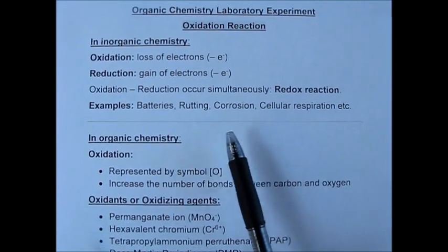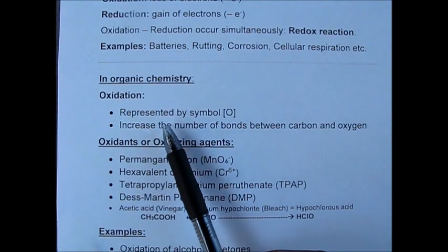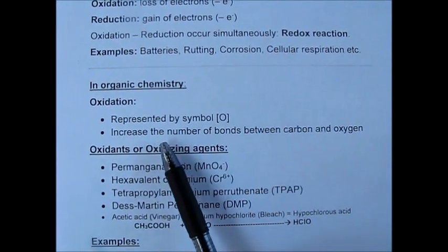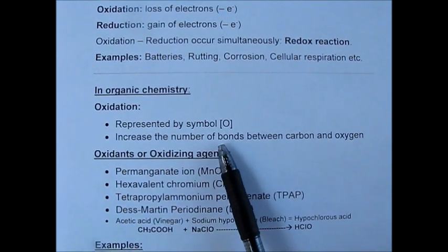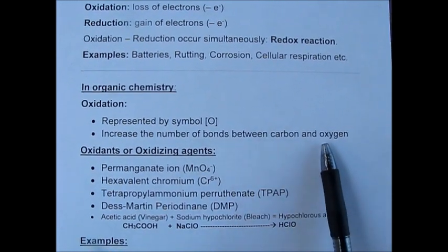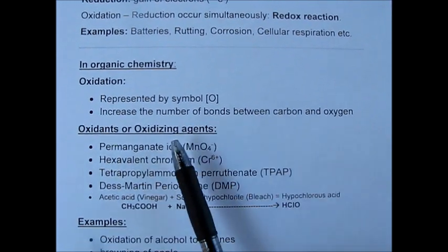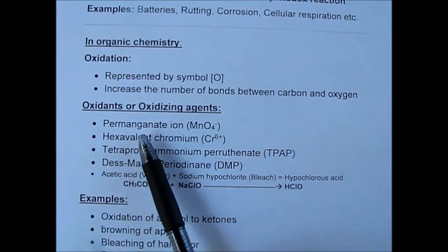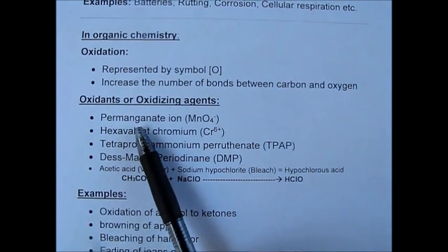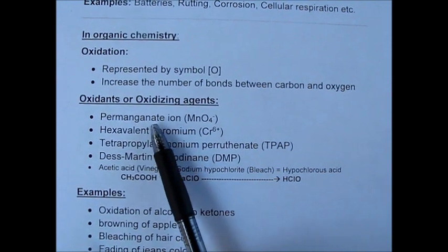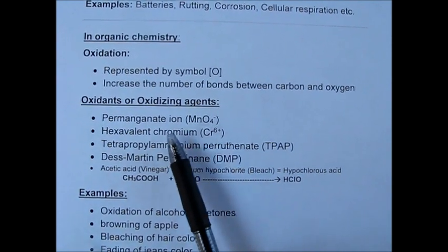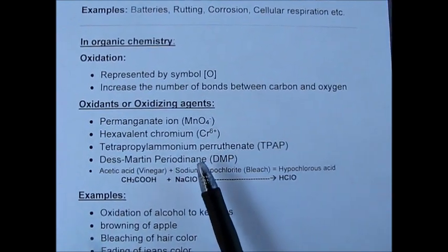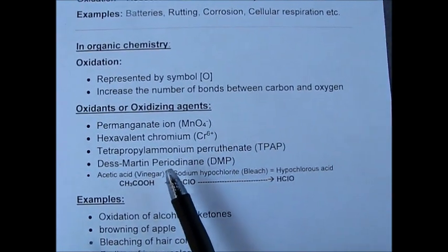In organic chemistry, oxidation is represented by the addition of oxygen and usually increases the number of bonds between carbon and oxygen. The oxidizing agents we use include permanganate ion or hexavalent chromium ion — these are very aggressive oxidants.